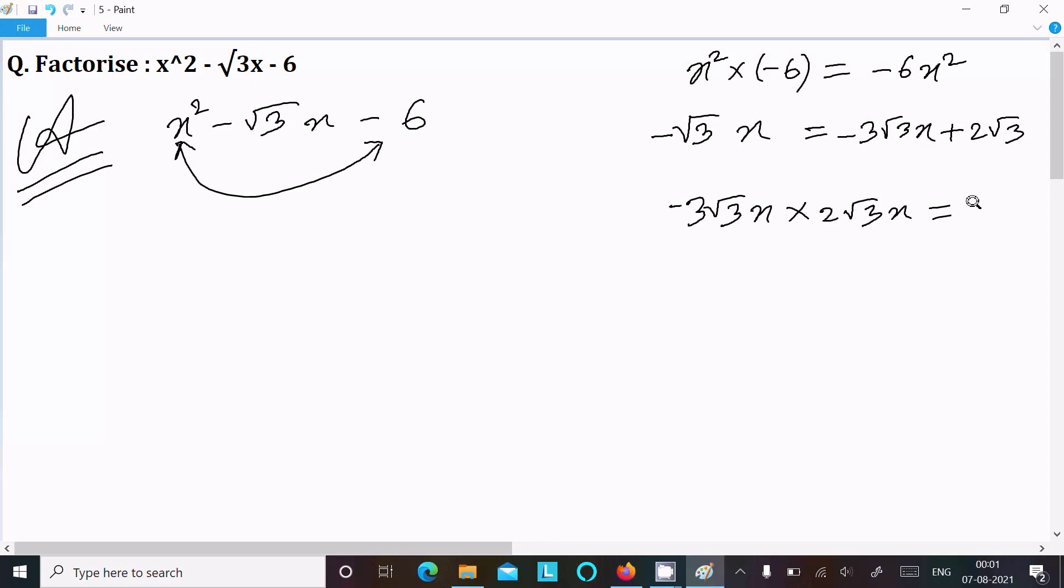18x² and -6x² are not the same, so we cannot take this combination. If they're the same then we can use it; if not the same we cannot use it. Let's try another combination.